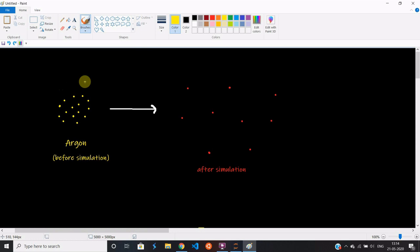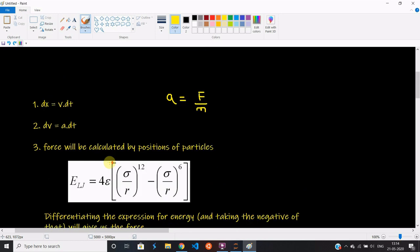We could do oxygen too, but it's just that it will become far more complicated, and I want to do a very basic molecular dynamics simulation. So now, how exactly do we calculate the trajectories? By trajectories, we are only interested in the positions of the argon particles at all times.